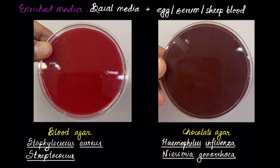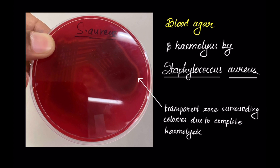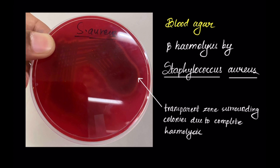Chocolate agar is used for culture of Haemophilus influenzae, Neisseria gonorrhoeae, and Neisseria meningitidis. This is your blood agar containing colonies of Staphylococcus aureus showing beta-hemolysis. Due to beta-hemolysis, you can see a transparent zone created around the colonies — this transparent zone is due to complete hemolysis.